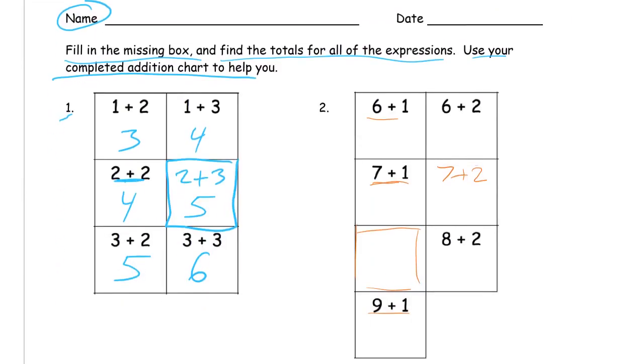So that's all we're doing, is we're taking the expressions from that part of the chart. And that's how we figure out what to put there. And then we're just going to solve all of the expressions. 6 plus 1 is 7. 7 plus 1 is 8. 8 and 1 more than 8 is 9, and 1 more than 9 is 10.